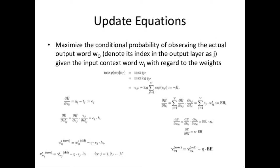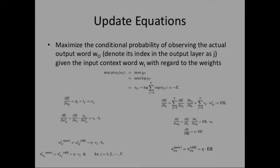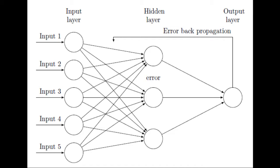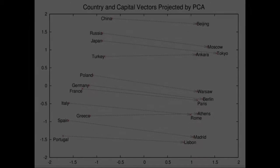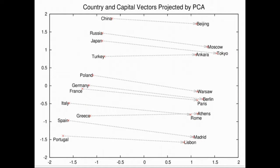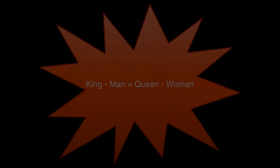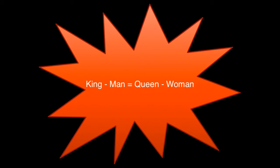First, everyone's heard of Word2Vec and everyone wants to know how it works, but it's kind of complicated. In this course I'm going to show you exactly how Word2Vec works from theory to implementation, and you'll see that it's merely the application of skills you already know. Word2Vec is interesting because it magically maps words to a vector space where you can find analogies like king minus man equals queen minus woman.